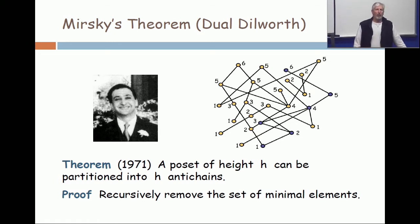What is a poset? What is the height? What is a partition into antichains? Can you really do it in H antichains? How do you find the height?